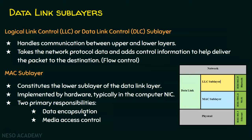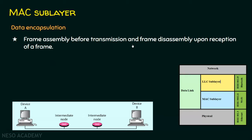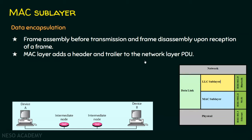In data encapsulation, the MAC sub-layer handles frame assembly before transmission and frame disassembly upon reception. After the logical link control sub-layer adds control information to the data received from the network layer, the MAC sub-layer collects all the bits and constructs the frame. The MAC layer adds a header and a trailer to the network layer PDU to create frames.